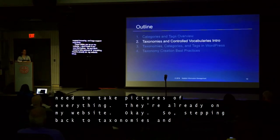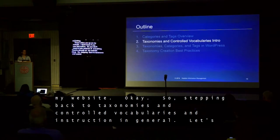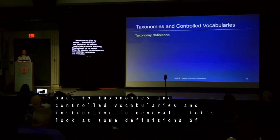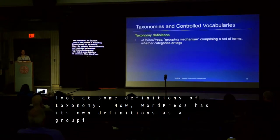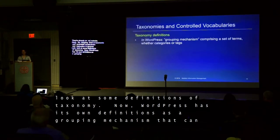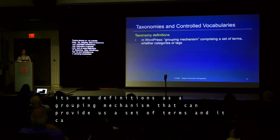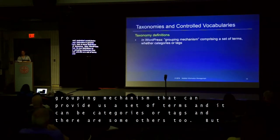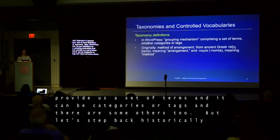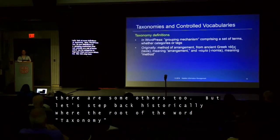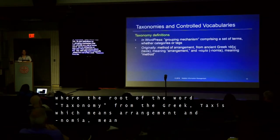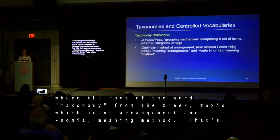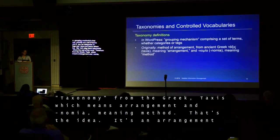Stepping back to taxonomies and controlled vocabularies. WordPress has its own definition — a grouping mechanism that comprises a set of terms, which can be categories or tags. But historically, the root of the word taxonomy comes from the Greek taxis, meaning arrangement, and nomia, meaning method. So it's an arrangement method. Whether tags are really a taxonomy is therefore questionable.